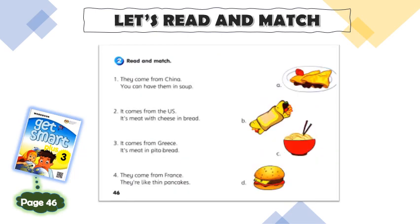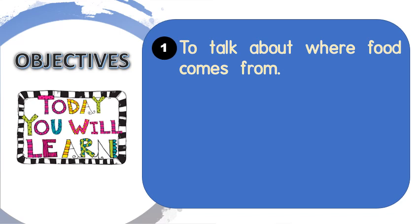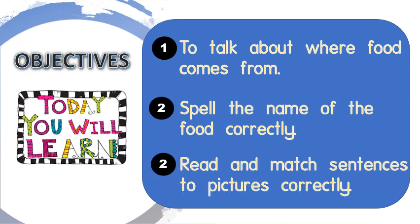Do your best. And for this one, you have to read and match. You just have to read and then match to the correct food. That's all for today's lesson. Hopefully by now you can talk about where food comes from, as well as spell the name of the food correctly, and read and match sentences to pictures correctly.